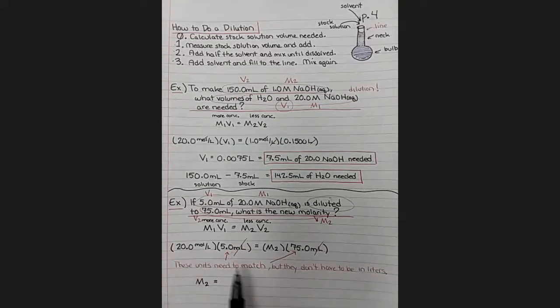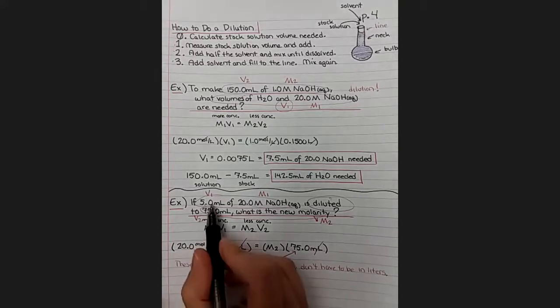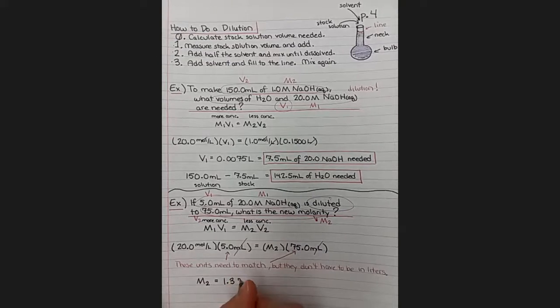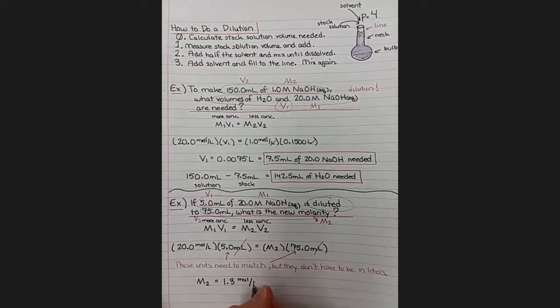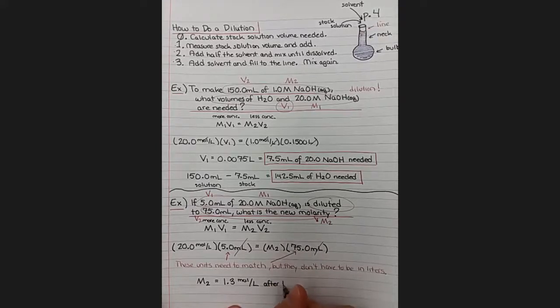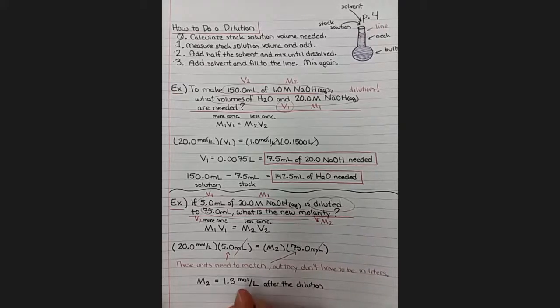So 20 times 5 divided by 75 with two significant figures will give us 1.3 moles per liter. And that is going to be the concentration of the solution after the dilution. Oh, I forgot to write what it was. Sodium hydroxide solution.